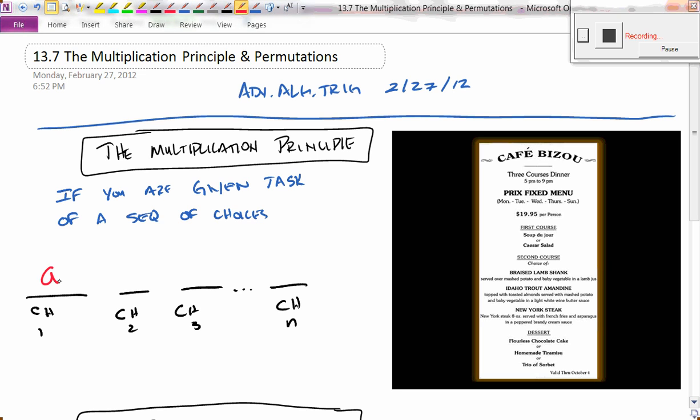If there are A ways that you can pick choice one, and B ways you can pick choice number two, and C ways you can pick choice number three, and D choices for choice number N, well the multiplication principle says that the total ways you can pick all these choices is to multiply them up to give you the total number of ways. This is a basic pattern that helps us learn how to count things a little bit better.